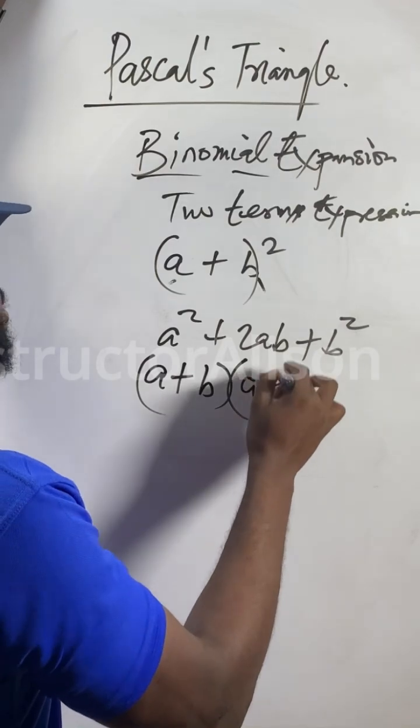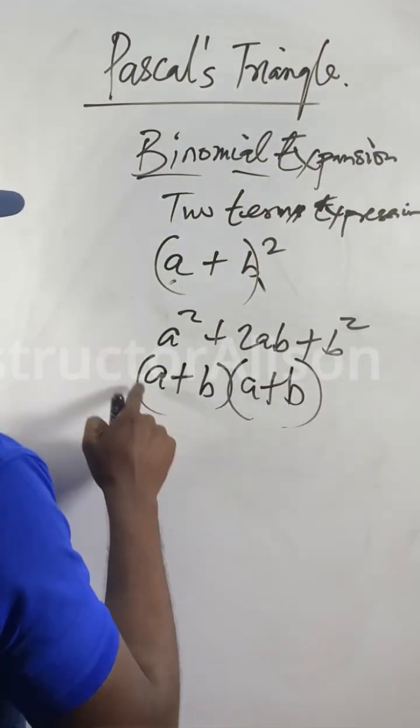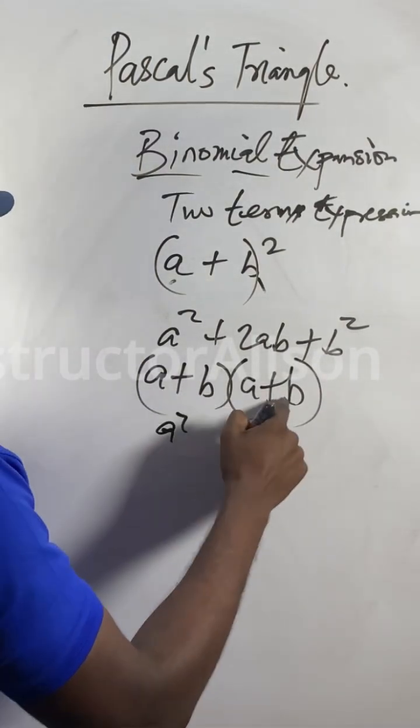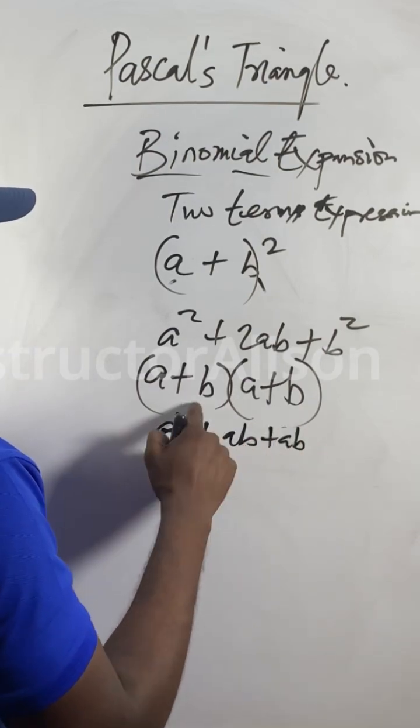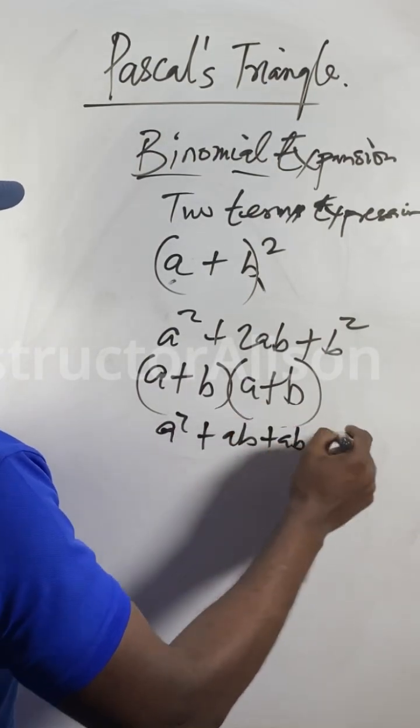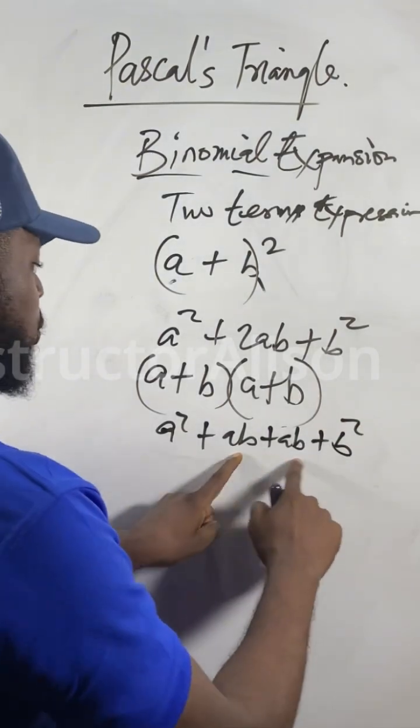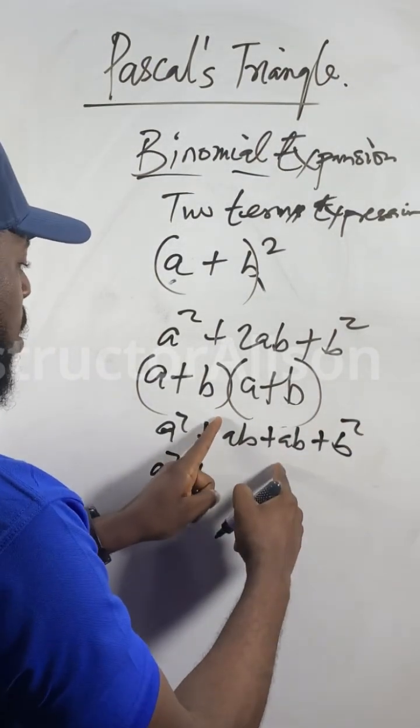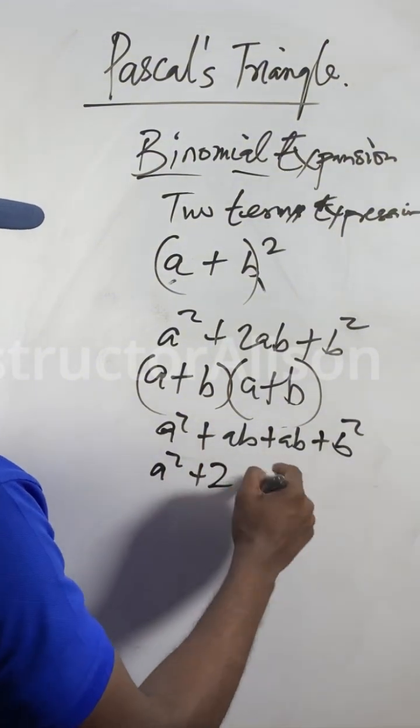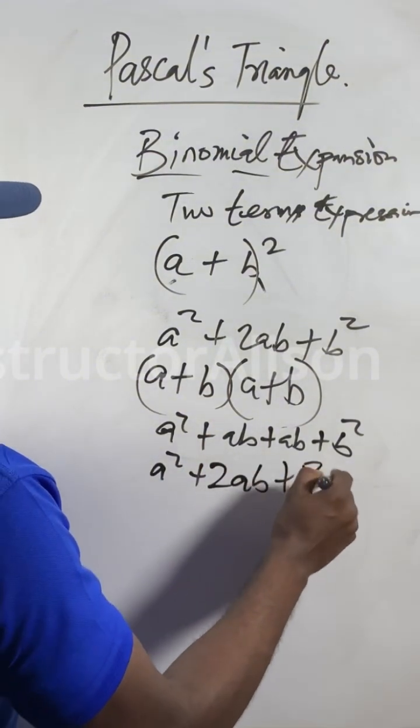Then begin to do your expansion. a times a: a squared. a times b: plus ab. b times a: b plus ab, maybe ba. Plus b times b: b squared. They call some of this one because they resemble a squared plus—coefficient here now, one, one. One plus one gives us two. Take one of them: ab plus b squared.